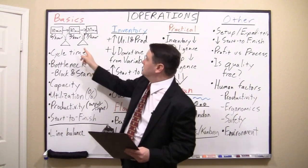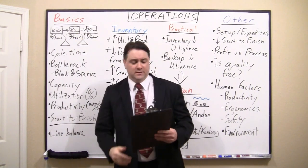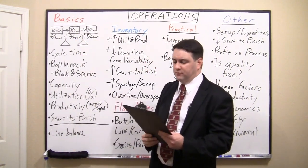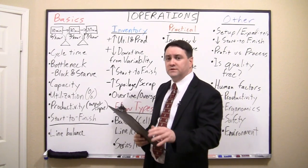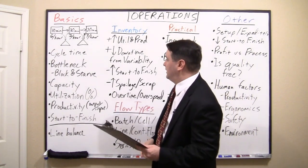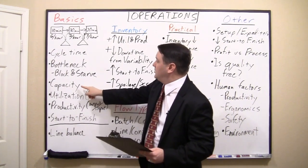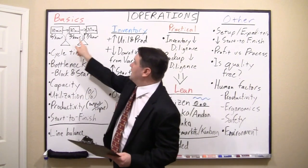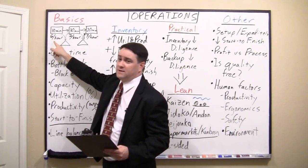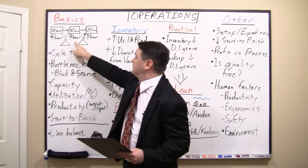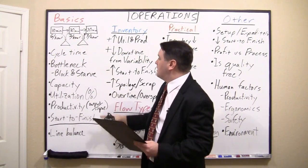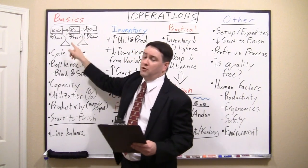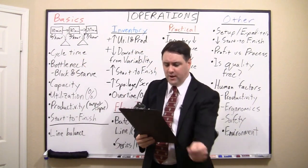What we notice here is the bottleneck in this operation is the middle operation, and that's important for several reasons. First, the bottleneck will determine your capacity — how many units per hour this process can create. The first operator can do 6 per hour, the bottleneck does 2 per hour, and the last does 3 per hour. But the capacity of the system is only 2 per hour, determined by the bottleneck.